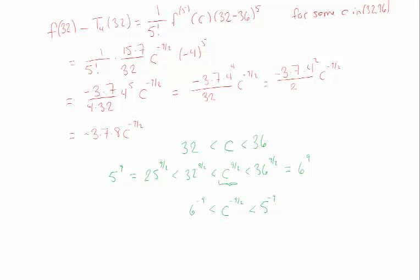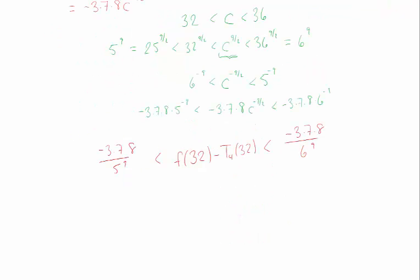And in fact, what I want is minus 3 times 7 times 8 c to the 9 halves. And because I added a negative, again, my inequalities are going to switch places. So in particular, I can guarantee that my error is negative. And it's between this number on the left and this number on the right.